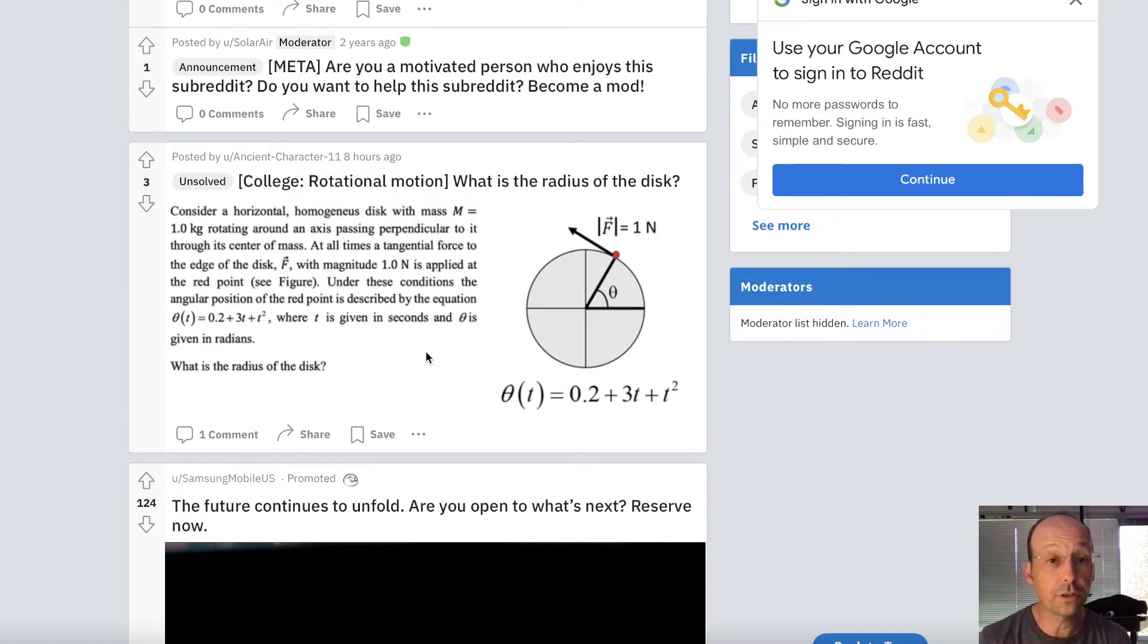At all times, the tangential force to the edge of the disc, F, has a magnitude of one newton, but of course changes direction. As applied at the red point, under these conditions, the angular position of the red point is described by the equation theta. So what's the radius of the disc?